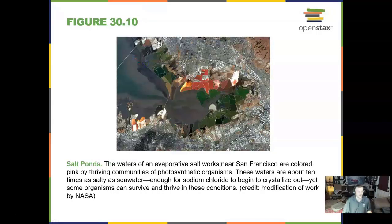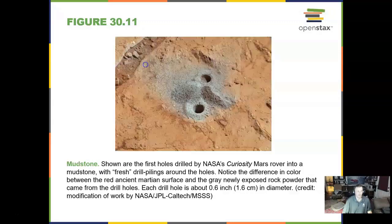Here are some salt ponds near San Francisco. We can look at mudstone — these were holes drilled by the NASA Curiosity Mars rover.